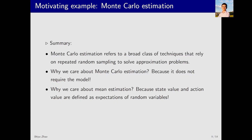Through this example, we gain a clear understanding of the fundamental idea behind Monte Carlo estimation. This method isn't limited to simple tasks like flipping a coin — any method that requires a large number of samples followed by approximation using those samples can be considered Monte Carlo estimation. We care about it because we don't have a model and Monte Carlo estimation doesn't require one. We care about mean estimation because state value and action value are essentially defined as means or expectations of random variables. This lays an important foundation for the contents we are going to study today.